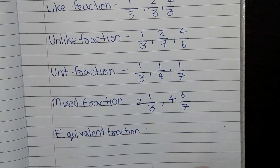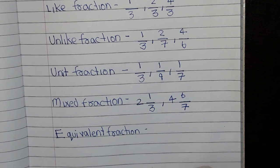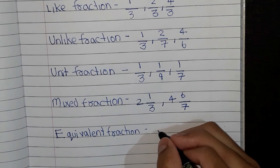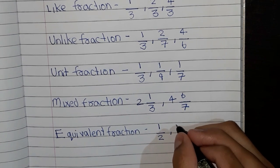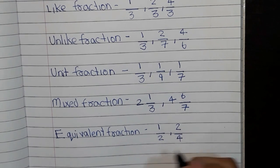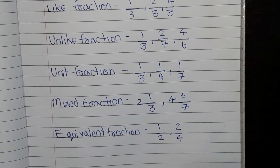Two fractions are said to be equivalent if the product of the numerator of the first and denominator of the second is equal to the first and numerator of the second. I will give you some examples: 1 by 2 and 2 by 4. So these two examples are equivalent.